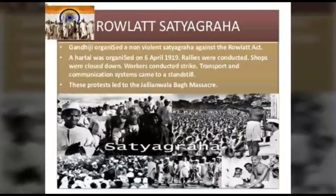Gandhiji launched a Satyagraha against the Rowlatt Act. On 6th April 1919, he appealed to the Indians to observe Hartal all over India against the act. Indians responded to this appeal on a large scale.